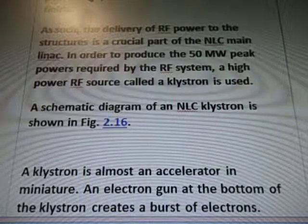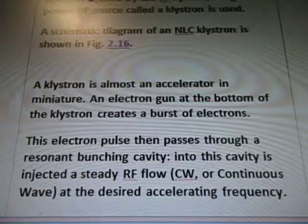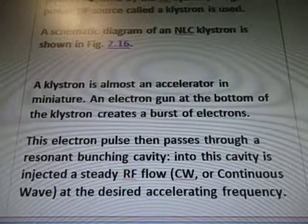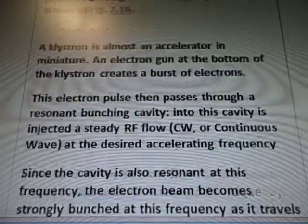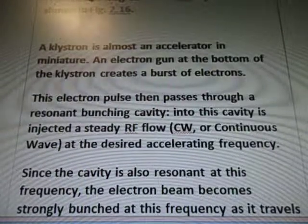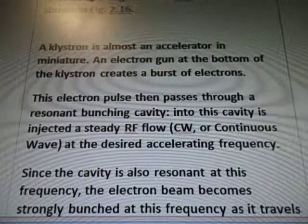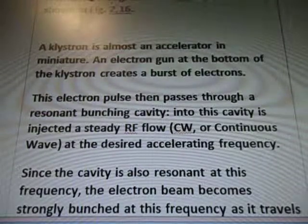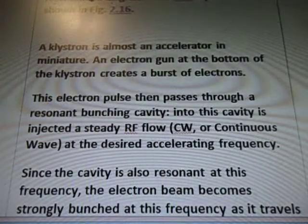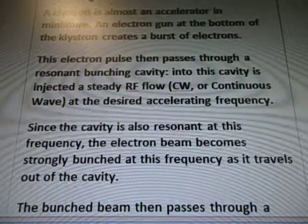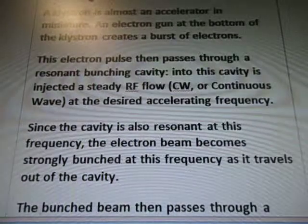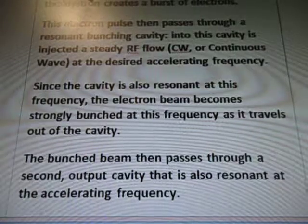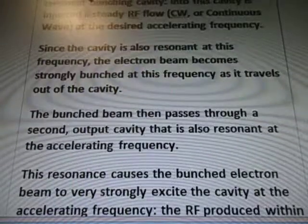The schematic diagram of that is shown. A klystron is also an accelerator — the miniature electron gun at the bottom of the klystron creates a burst of electrons. This electron pulse then passes through a resonant bunching cavity. Into this cavity is injected a steady RF flow, CW or continuous wave, at the desired accelerating frequency. Since the cavity is also resonant at this frequency, the electron beam becomes strongly bunched at this frequency as it travels out of the cavity.